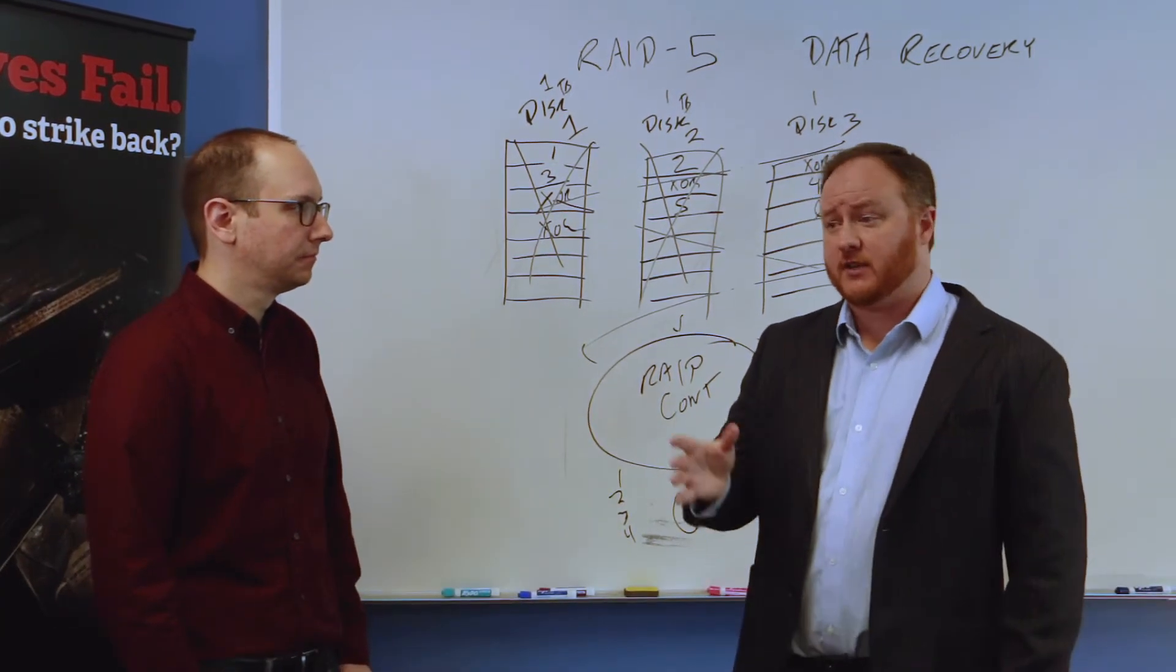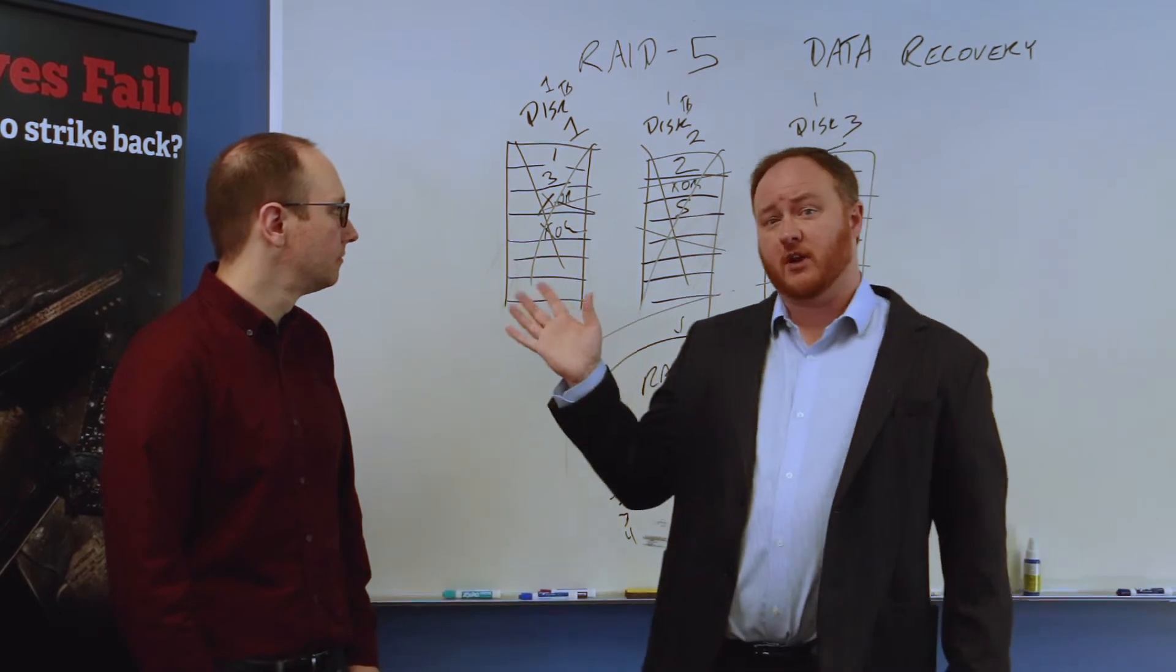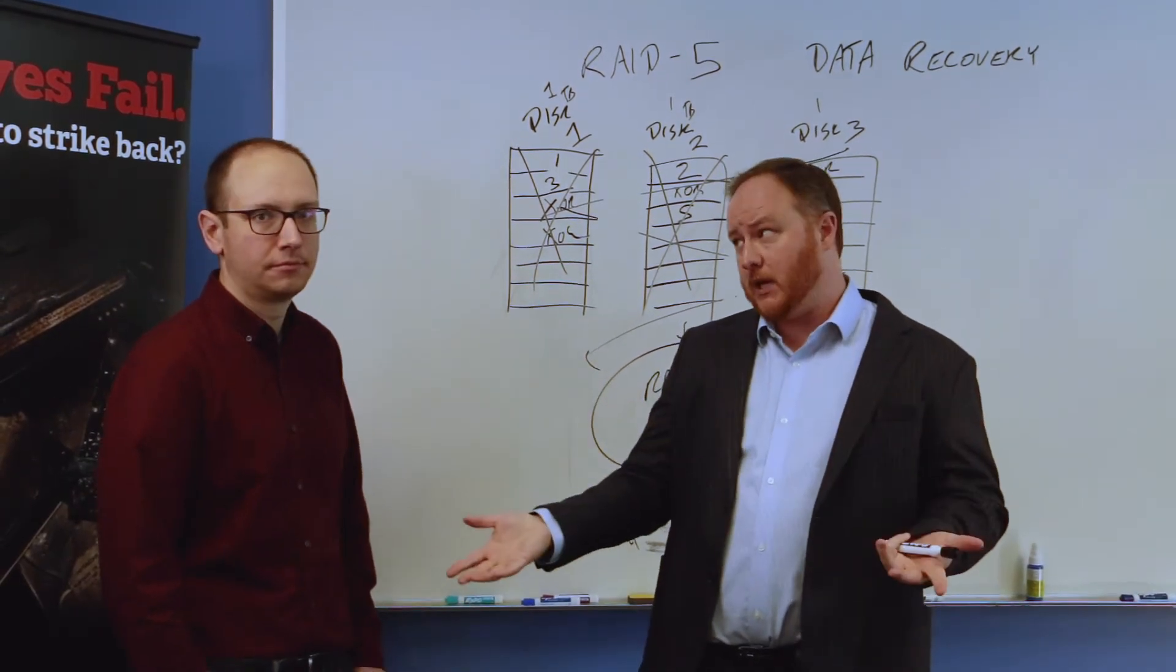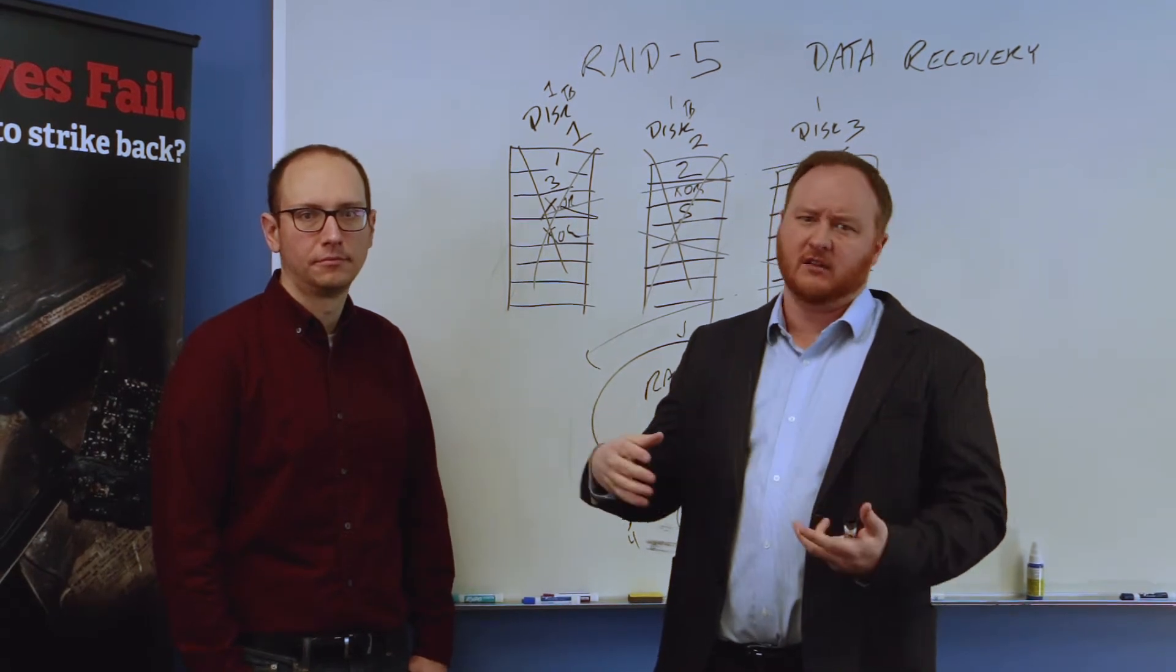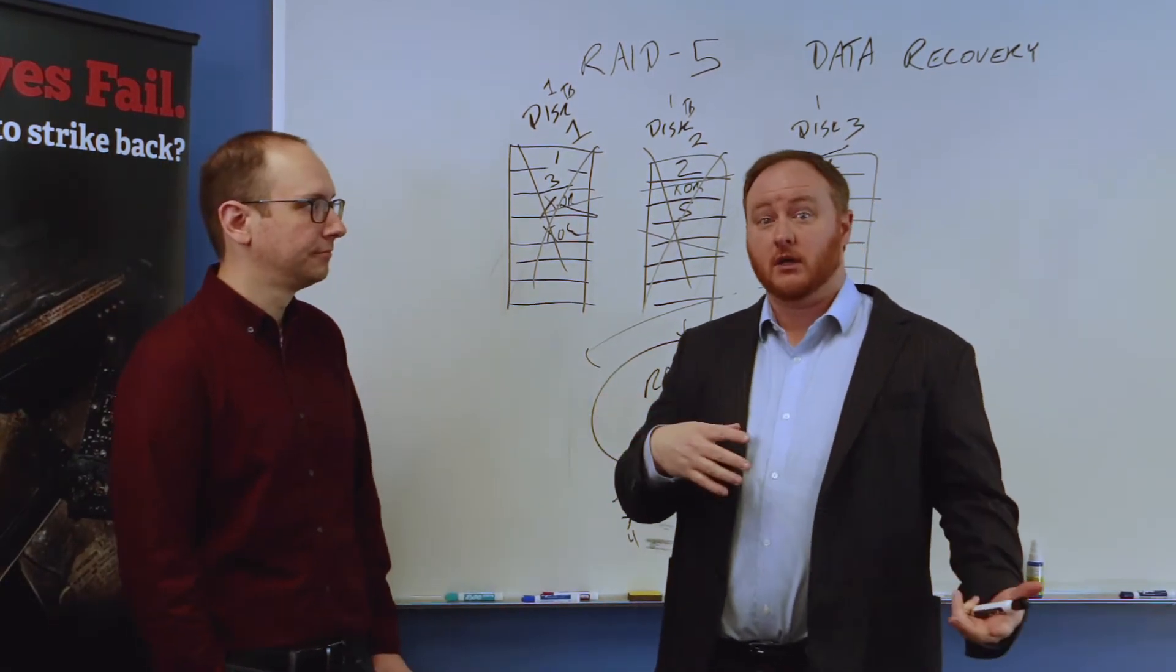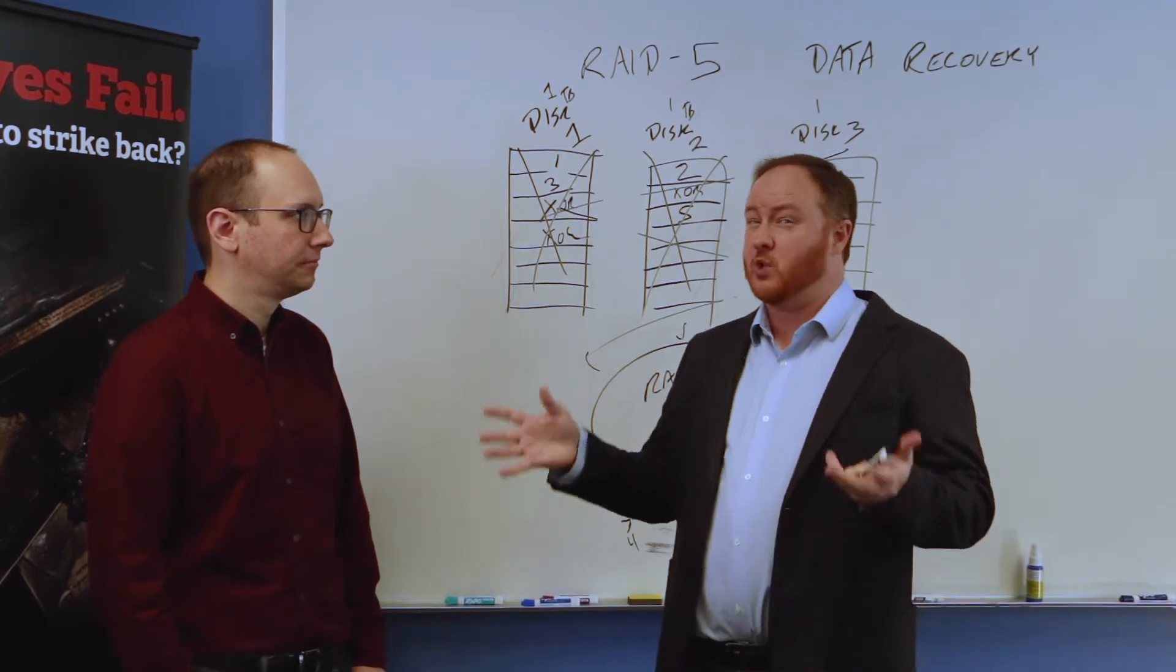When people choose our standard service, I would say an average turnaround time for a three or four disc RAID 5 is probably about a week. It could be a little less, a little more, especially if the drives are 8 terabyte drives or 12 terabyte drives. The more machine time we have, there's really not a lot we can do about that.